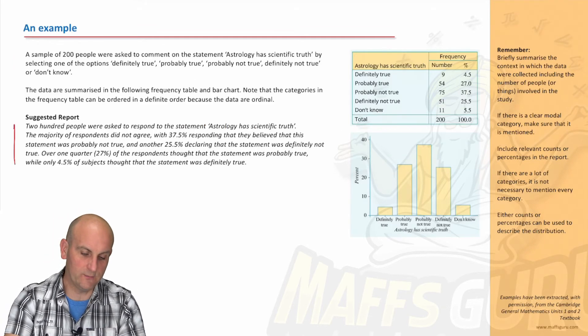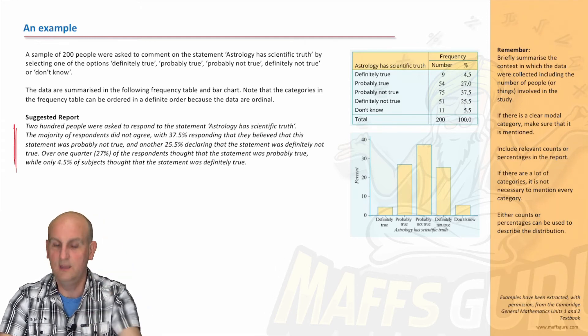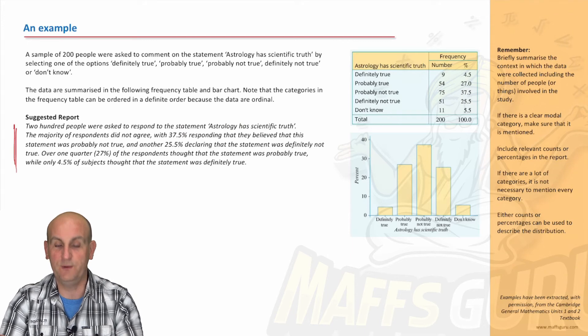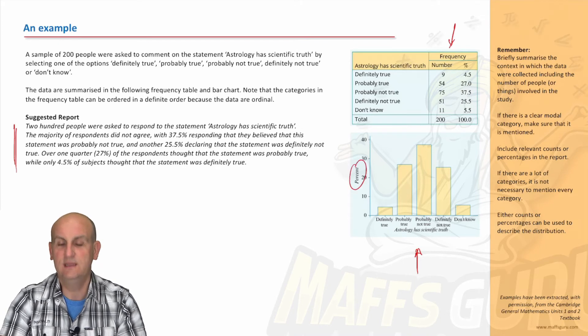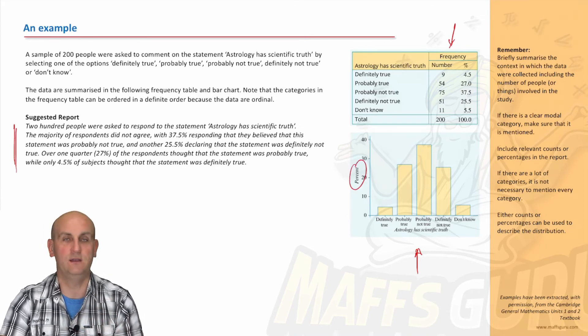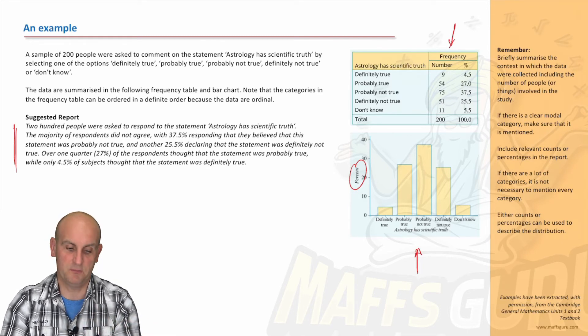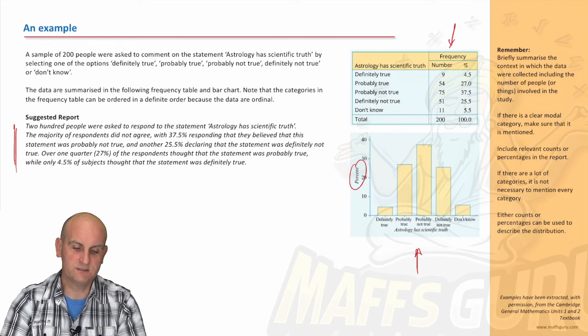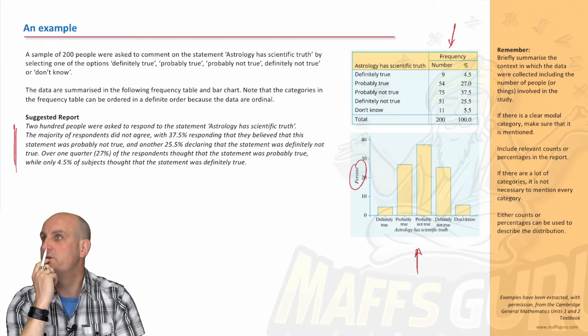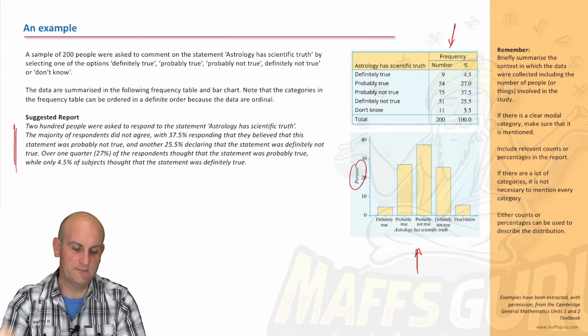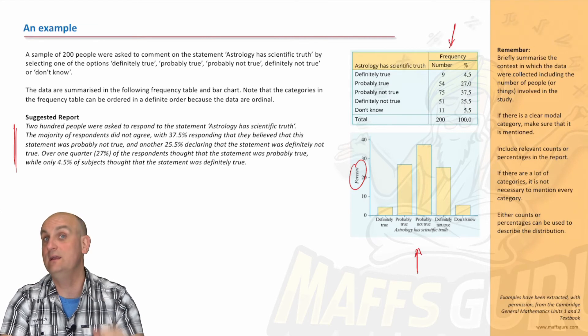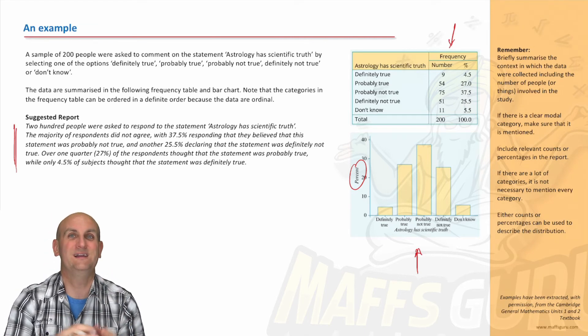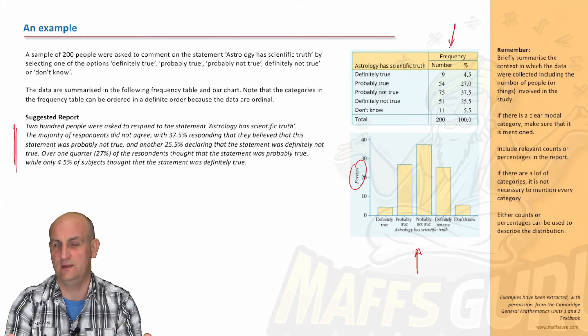Oh, here's another example. I don't know about you, but I went straight to the length of that one. It's like, whew. Now in this situation, what do we have here? We've got a frequency table with both number and percentages, and we have one bar chart. Now in this situation, what we notice is they've done a percentage bar chart. That's fine. We don't need the number one. We can now talk in terms of percentages. Not a problem. A sample of 200 people were asked to comment on the statement, astrology has scientific truth. I wonder how my report's going to start. In a survey of, yeah, let's come back to the moment.